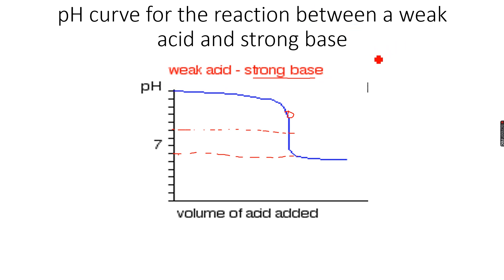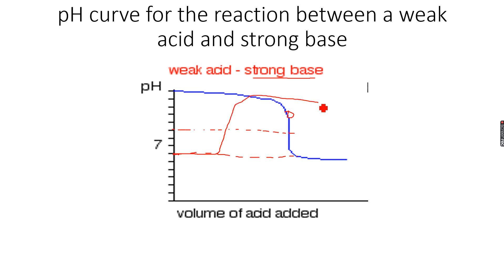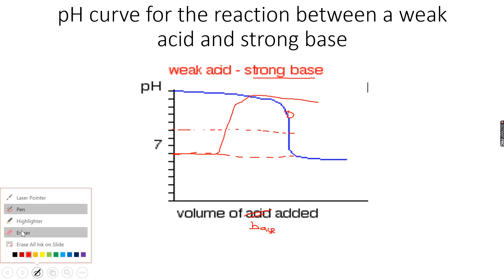The base dominates because the base is strong while the acid is weak. So this is a pH curve for the reaction between a weak acid and a strong base. You have to learn how these curves look. It can also start from an acid, in which case it will go in the opposite direction, and here instead of acid we will have volume of base or alkali added.